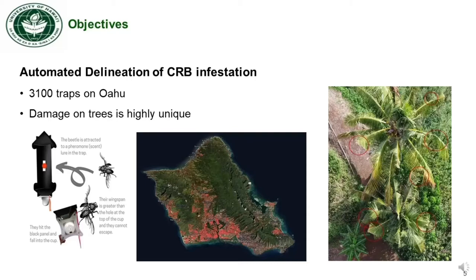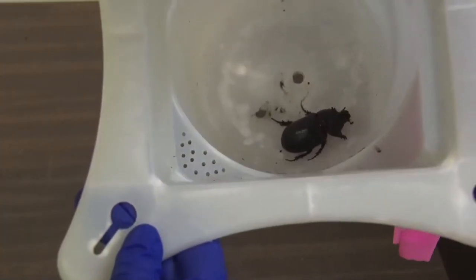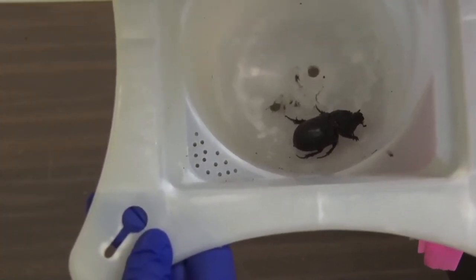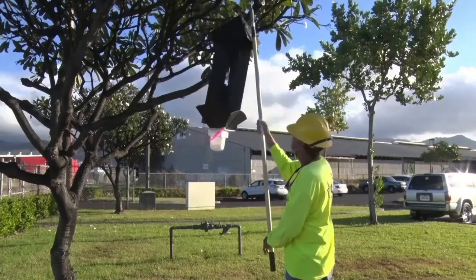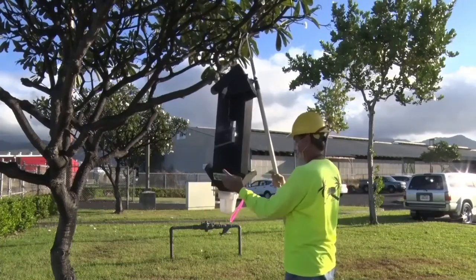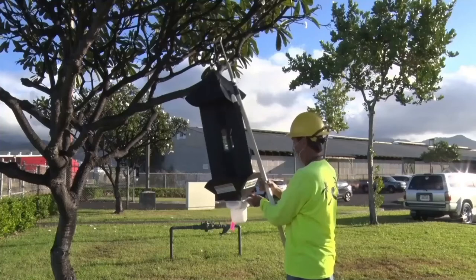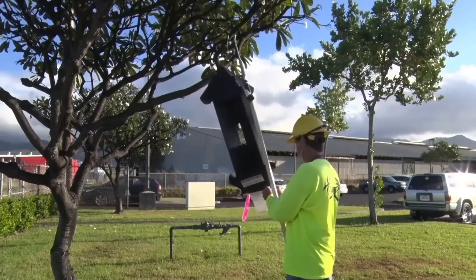Our first objective is to have automatic delineation of CRB infestation with smart camera boards that detect and report CRB wirelessly. The CRB response team has installed more than 3,000 CRB traps, and here is the distribution of panel traps around Oahu. Trap inspection rate is once a week to every four weeks. Traps use lure to attract the CRB, then it falls inside a cup. Checking the trap is expensive and laborious, so we want automatic trap surveillance to help find new CRB breeding locations more rapidly and also get feedback on spraying treatment and sanitation efficiency.